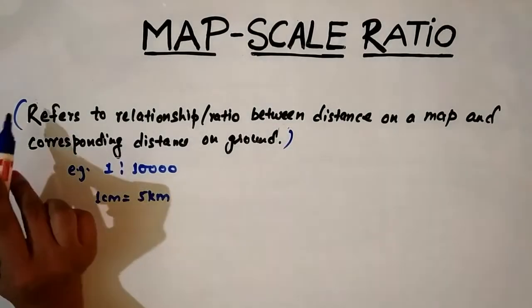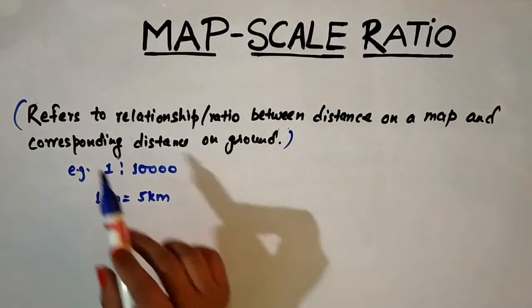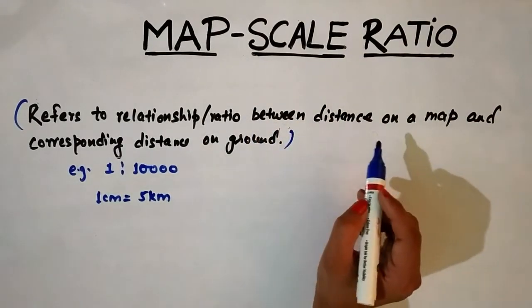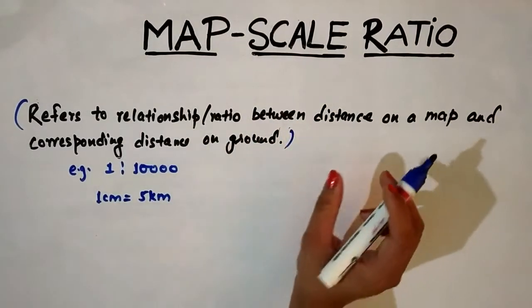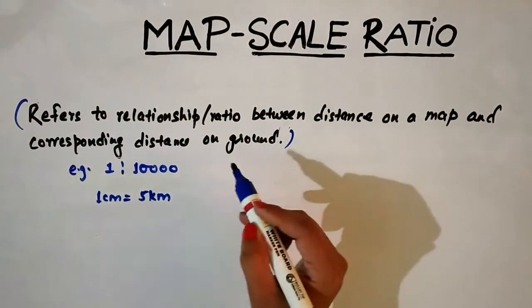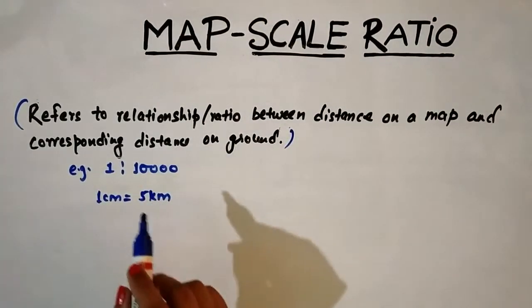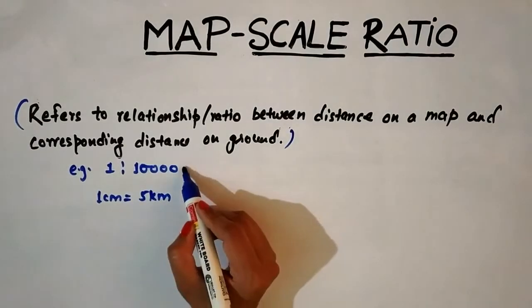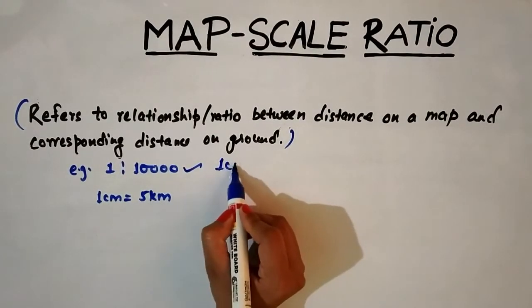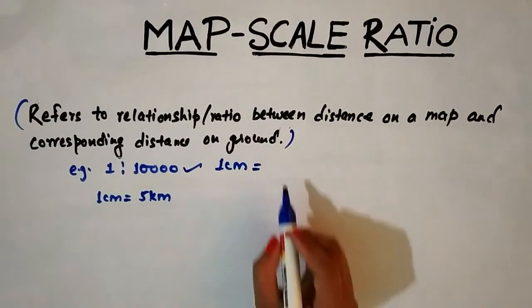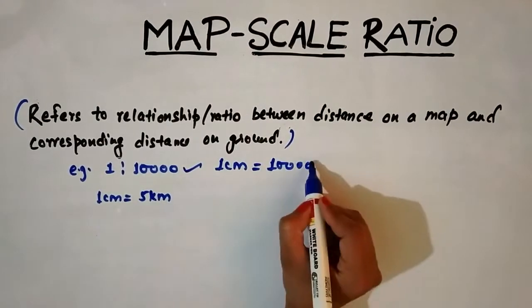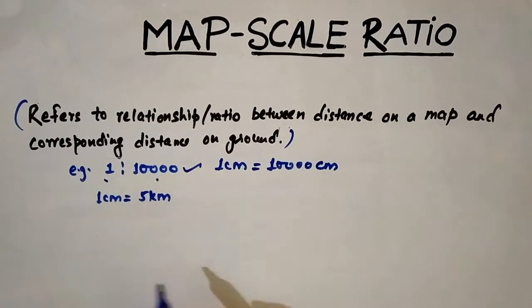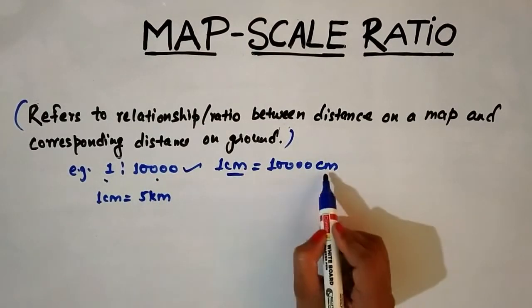This means we have some distance given on the map, and on the basis of that we equate that particular distance with some reality, or some ground distance. For example, we have a ratio given as 1:10,000. This means one centimeter on the map is equal to 10,000 centimeters in reality. Whenever we are not given any unit with these numbers, we take centimeter as the unit.